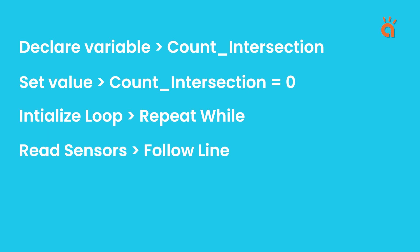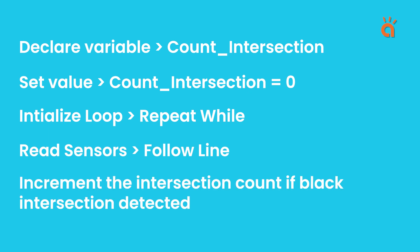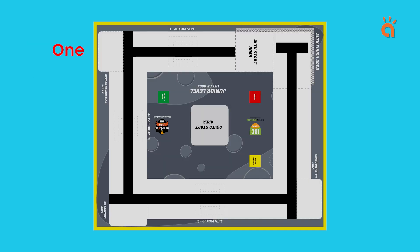Next, if the sensor detects a black intersection, the robot needs to know what to do. So, we will first increment the counter value by one each time the robot detects a black intersection. Now, on intersection 1, 2 and 3, we just need to take a left turn but on intersection 4, we will stop the robot.